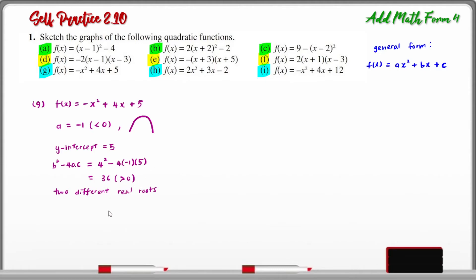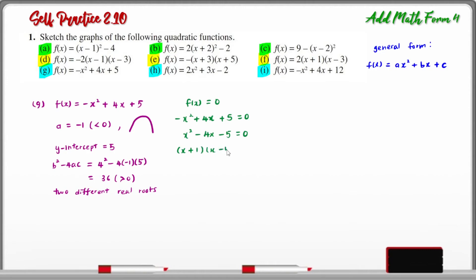To find the roots, we let f(x) = 0: -x² + 4x + 5 = 0. Dividing each term by -1 gives x² - 4x - 5 = 0. Factorizing gives (x + 1)(x - 5) = 0, so x = -1 or x = 5.